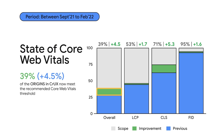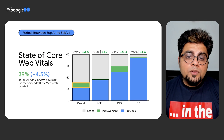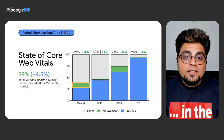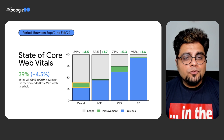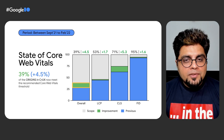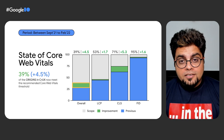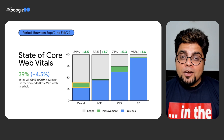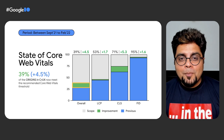If we compare with the same time last year, the CLS improvement is nearly 25%, and overall improvement is nearly 15%. This means that all kinds of sites, whether big or small, have had success improving their Core Web Vitals scores. More and more companies are realizing that improving Core Web Vitals is important not only for users to have better experiences, but also for positive business impact. As a result, many companies are prioritizing it, even making them company-wide key performance indicators.